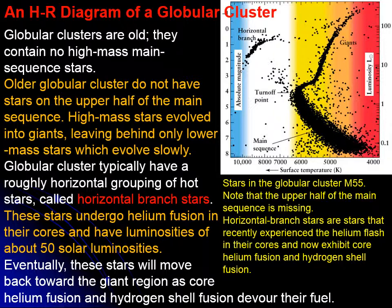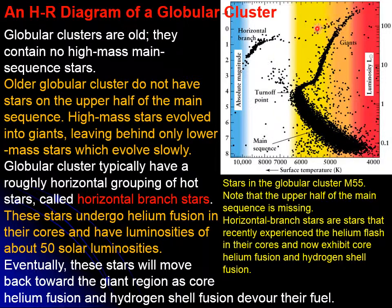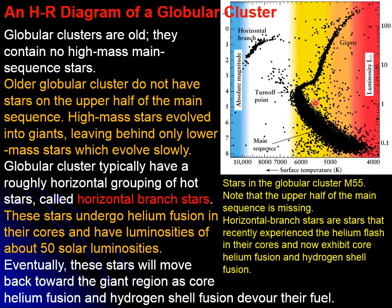We end up with a situation where the main sequence was once filled all the way to the top corner. But the big stars finished their main sequence stage and began moving toward the giant and supergiant region, then bounced back into a region we'll call the horizontal branch. Meanwhile, the rest of the cluster remains on the main sequence, still waiting for its time to abandon it and become a red giant.